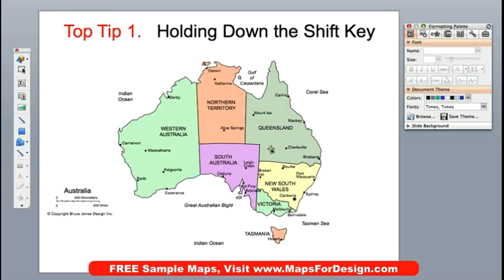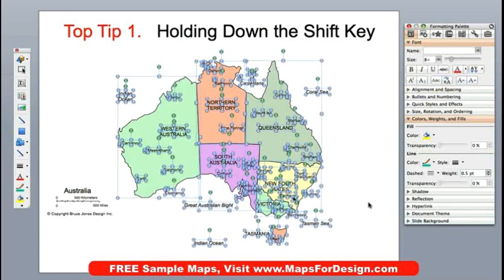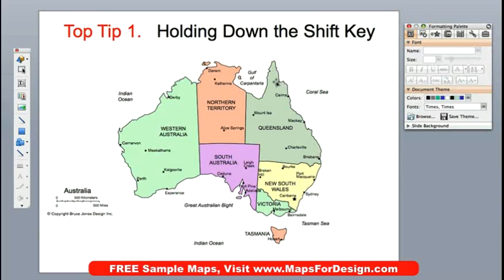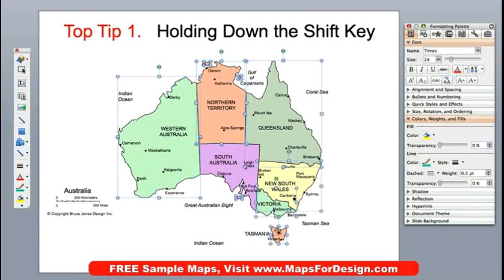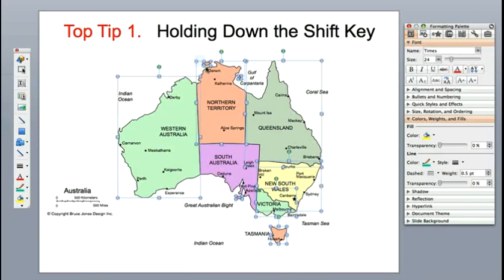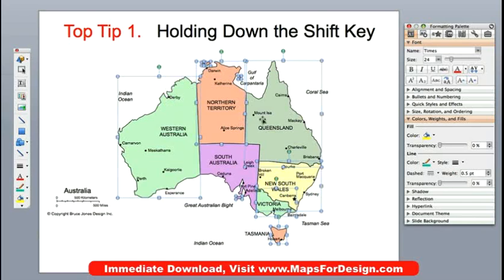On a map like this, if I did a select all, you'll notice everything gets selected and I don't really want that — I just want to change the land. So if I hold down my shift key, I can take my pointer and work my way around and click all the land elements. You see they're all becoming selected. I'm just holding the shift key down.